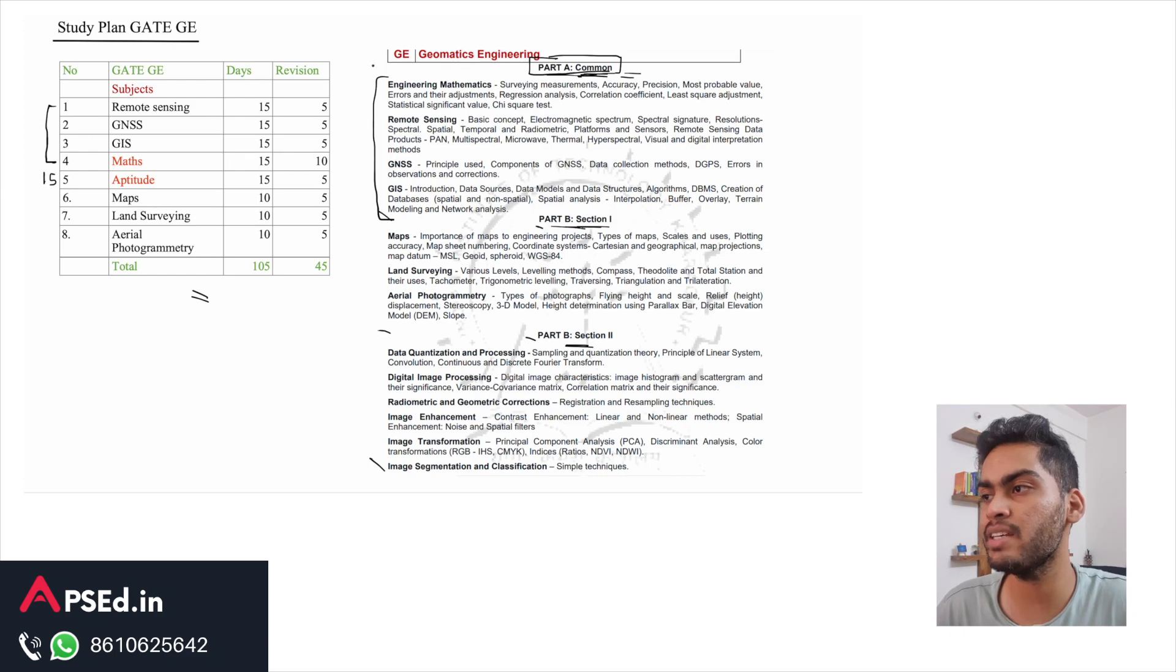So if we take these four topics plus aptitude, aptitude is fixed at 15 marks and these four topics are there for 55 marks. If we combine the first five topics, these four plus aptitude, then you are reaching the number of 70 marks.